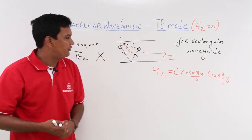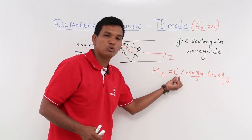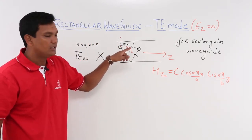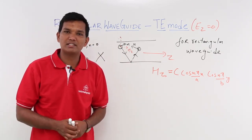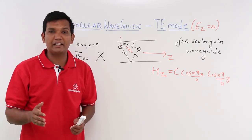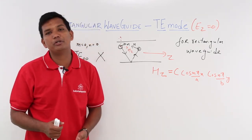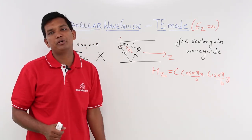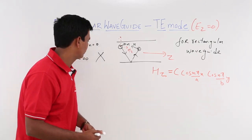Why? If cos(0) · cos(0) = 1, then Hz will equal a constant C. If your magnetic field along Z is constant, then your electric field will not exist — that is what Maxwell says. A time-varying magnetic field will produce an electric field. But if your magnetic field itself is static, it will not produce an electric field. So we are saying that if Hz is constant, it will not produce an electric field. Therefore, TE(0,0) mode will not exist.